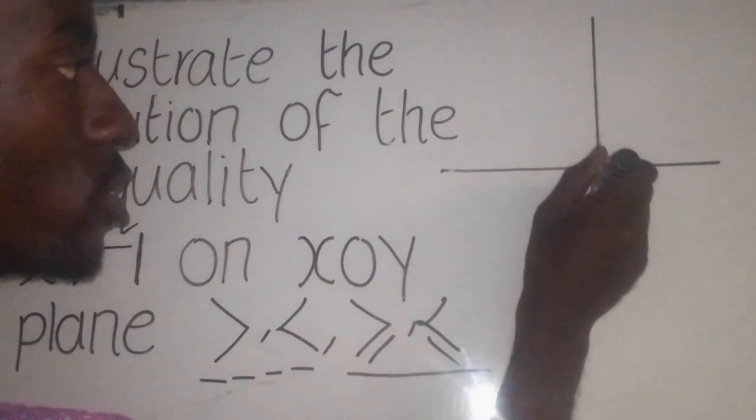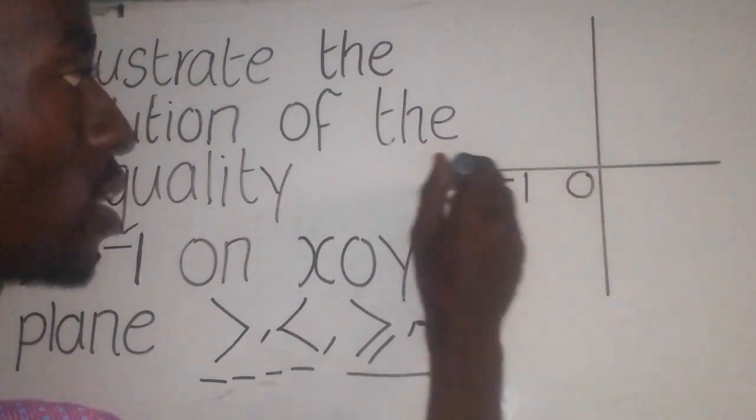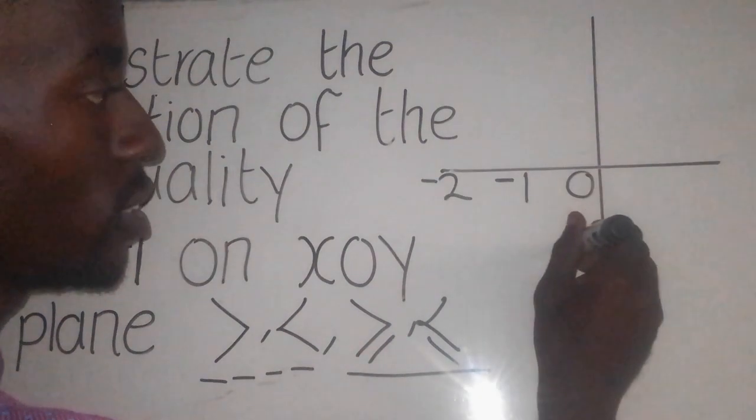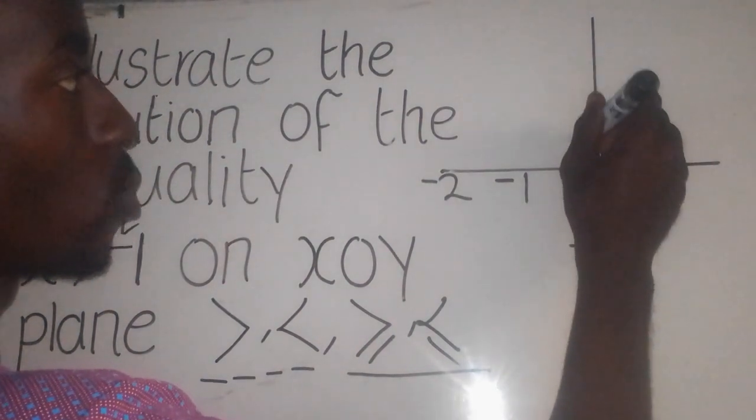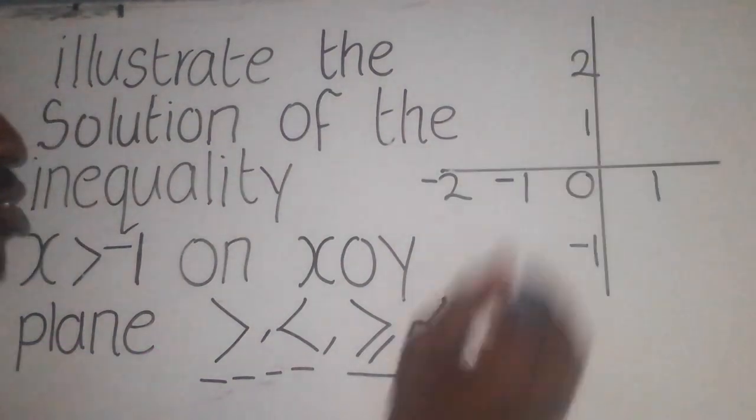So, this is where 0 is. This is negative 1. This is negative 2. This is negative 1. This is 1. This is 1 here. This is 2 there and so on.